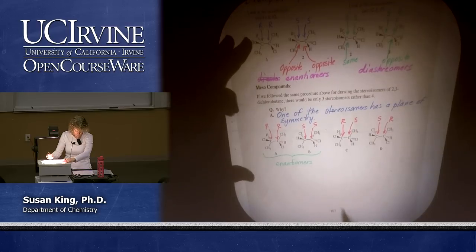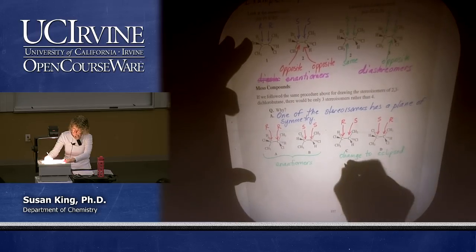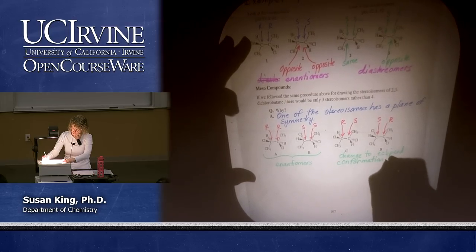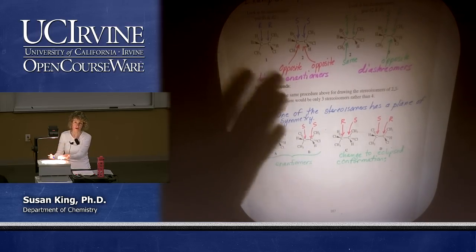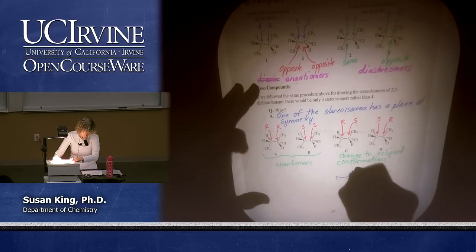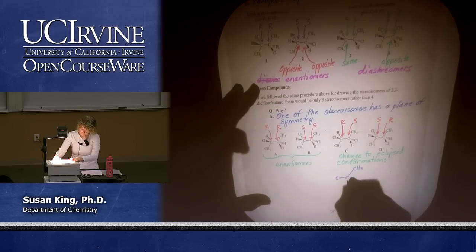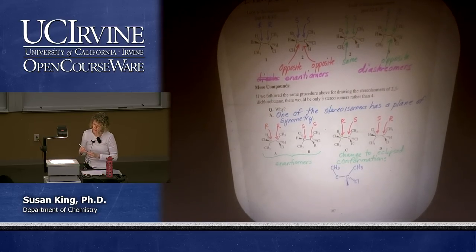If you change to the eclipsed conformation you can do that a number of ways. I'm going to keep the right hand side the same and then rotate the methyl on the left 180 degrees. If you have trouble with this you can always put it into a Newman projection — it's a lot easier to rotate Newman projections. So I'm going to rotate this up so it's eclipsed.